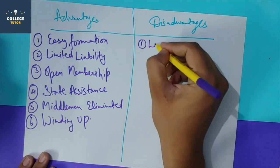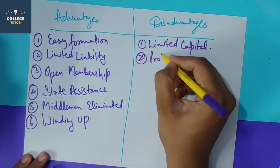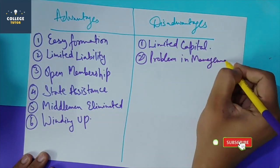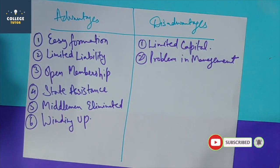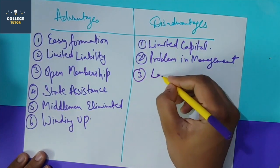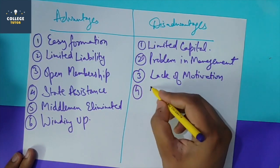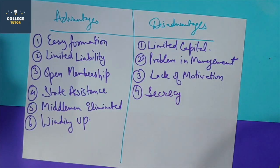Now the disadvantages. First is limited capital - the capital that can be raised depends only on the members' contributions, which limits the financial ability. Second is the problem in management - cooperative societies generally lack managerial talent. While members associate together, you need someone who can manage, guide and take decisions, and not everyone has managerial ability. There is also a lack of motivation since the society is not formed for profit but for welfare. Finally, lack of secrecy - in cooperative societies, information is shared among many members, and conflicts can arise from this.